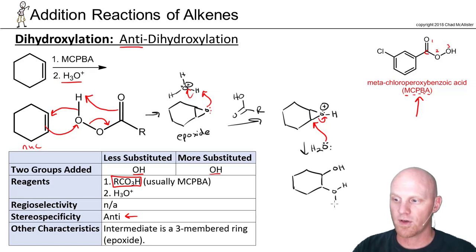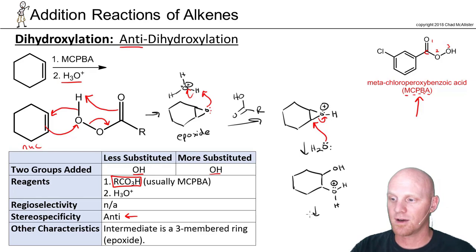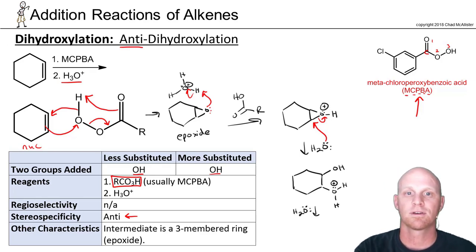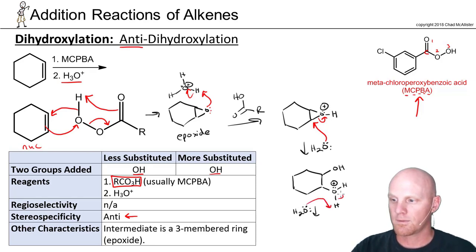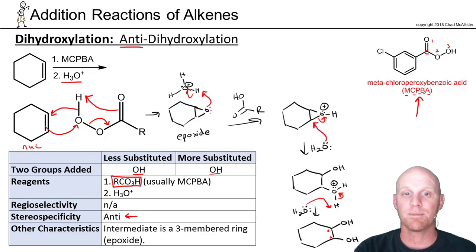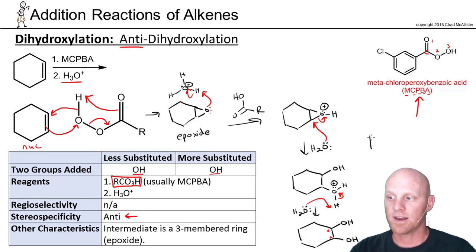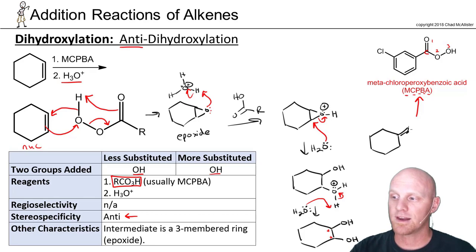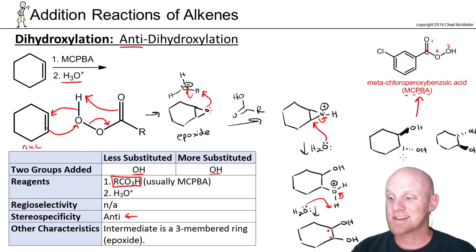On the other side we have an entire water molecule attached. We never end a reaction with an oxygen bearing three bonds and a positive charge — this is highly acidic, so another water molecule comes and deprotonates. Our final product has an OH on both carbons. If you examine the two carbons now sp3 hybridized — they were previously sp2 — they are both chiral centers. Being an anti-addition, one OH is going to be on a wedge and one on a dash. The enantiomer also forms where the top one is on the dash and the bottom on the wedge. This is anti-dihydroxylation.